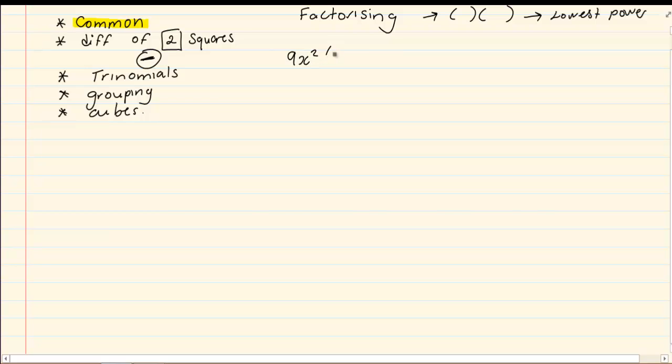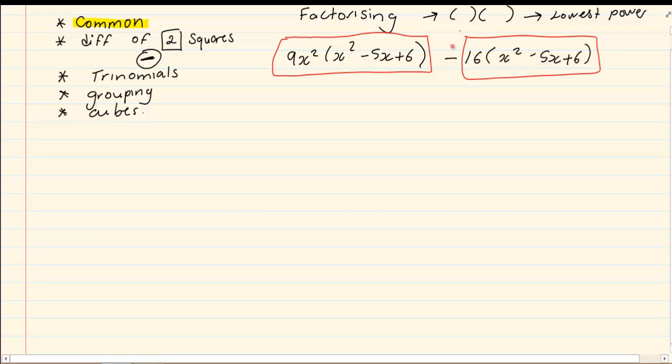If you take the following example: 9x squared into x squared minus 5x plus 6, minus 16 into x squared minus 5x plus 6. Now, the first rule is to take out a common. To take out a common, you have to look in every term. Pluses and minuses break terms. So, basically, this is where the crack is. Now, in each term, what is the same?